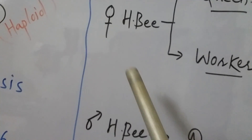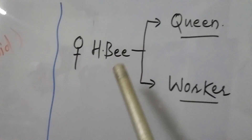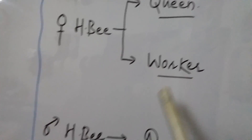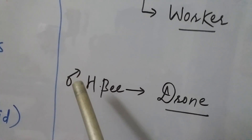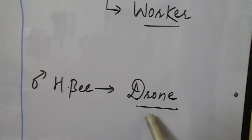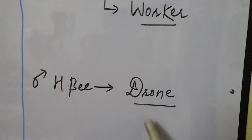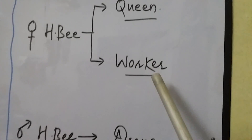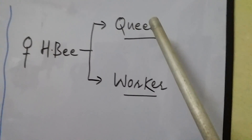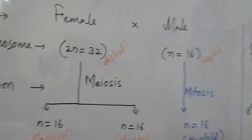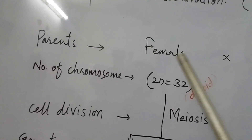The female honeybee may be a queen or a worker, while the male honeybee is known as a drone. So in the honeybee colony there may be a drone, a worker, or a queen. Let's look at the explanation to understand the process of sex determination.